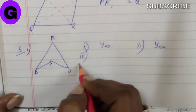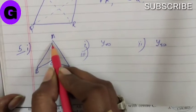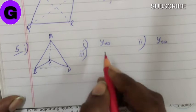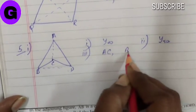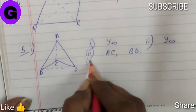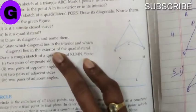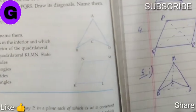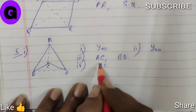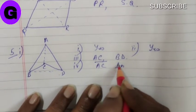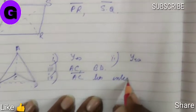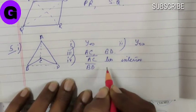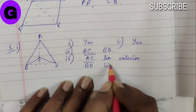Number 3, draw its diagonal and name them. So the diagonals are A, C and B, D. Number 4, state which diagonal lies in the interior and which lies in the exterior. A, C lies interior whereas B, D lies exterior.